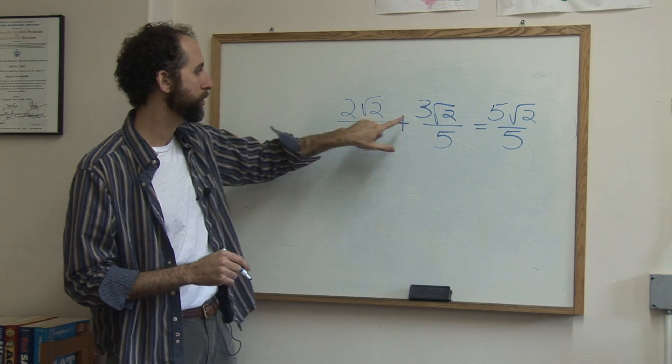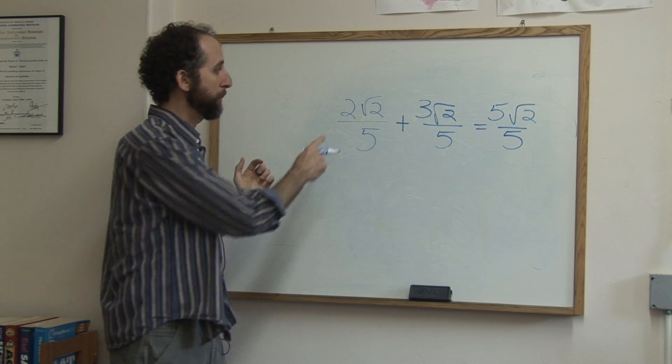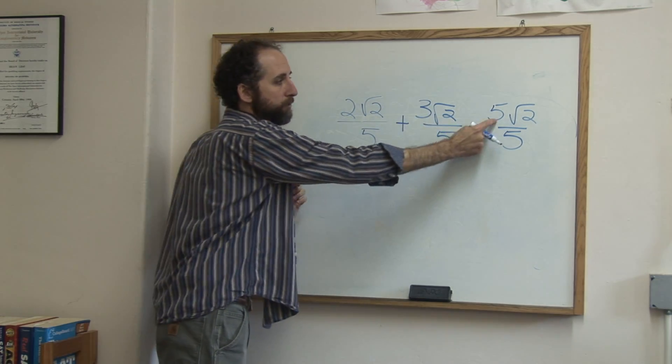In other words, we're not saying square root of two plus square root of two is square root of four. It's not. It just stays the same and you're adding them up like two apples plus three apples is five apples.